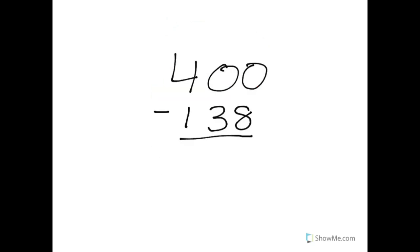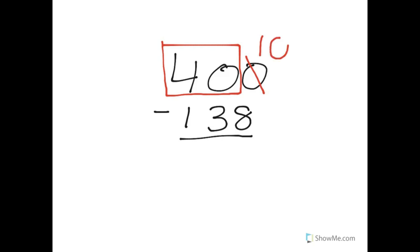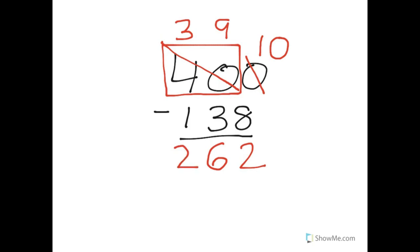Let's look at another one. This time we have 400 minus 138. And again, we see that we have zero, and we need to give away eight — we can't do it. So we're going to go next door to the tens place, but there's also a zero there. So what we need to do is we're going to box and regroup. We're going to make everything a group of ten, and then regroup like normal. Our zero becomes a ten, because we always borrow ten. And our forty, we take one away from it, becomes thirty-nine. Then we just subtract. Ten minus eight is two. Nine take away three is six. And three take away one is two. Our difference here is 262.